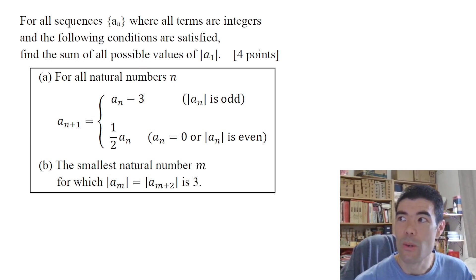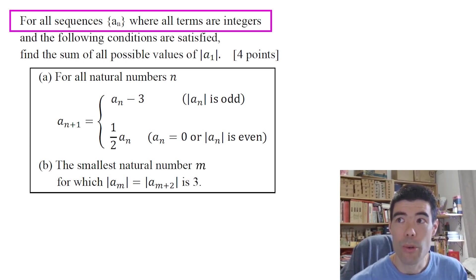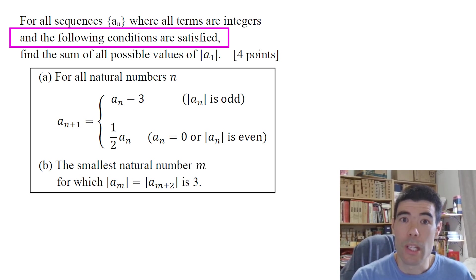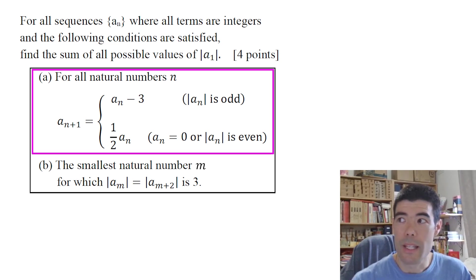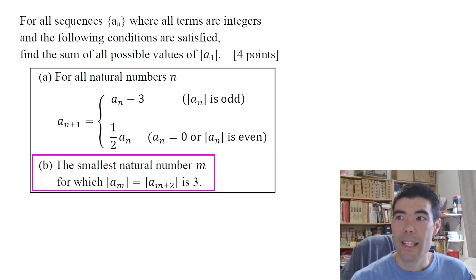So here's the whole translated problem. For all sequences a_n, where all terms are integers and the following conditions are satisfied, find the sum of all possible values of the magnitude of a_1. So the first condition a defines a sequence where a_{n+1} is a_n minus 3 if a_n were odd, and half of a_n if a_n were 0 or even. And condition b, the smallest natural number m for which |a_m| = |a_{m+2}| is 3.